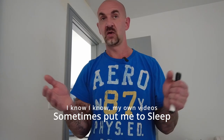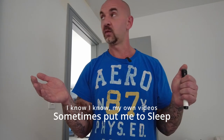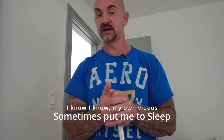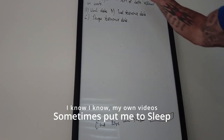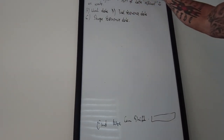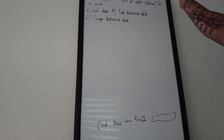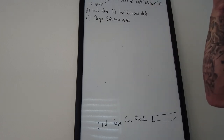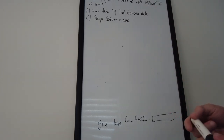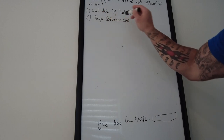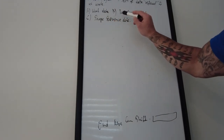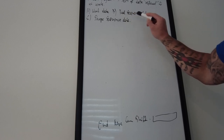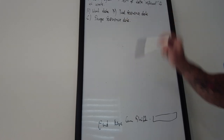Without further ado, let's get to it. I'm going to shift the camera to my blackboard. A Mazak program equals three sets of data referred to as units or common units — so we're going to have three things: A, B, and C. You have unit data, then your tool sequence data, and shape sequence data.